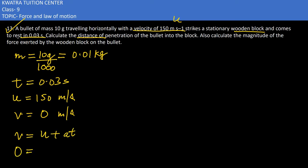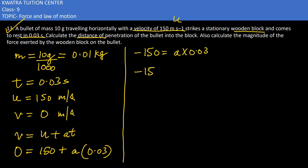What is V? 0. U is 150. A is not known. T is 0.03. So from this we can easily find A. Take 150 to the other side, minus 150 it would be, and A is in multiplication with 0.03.